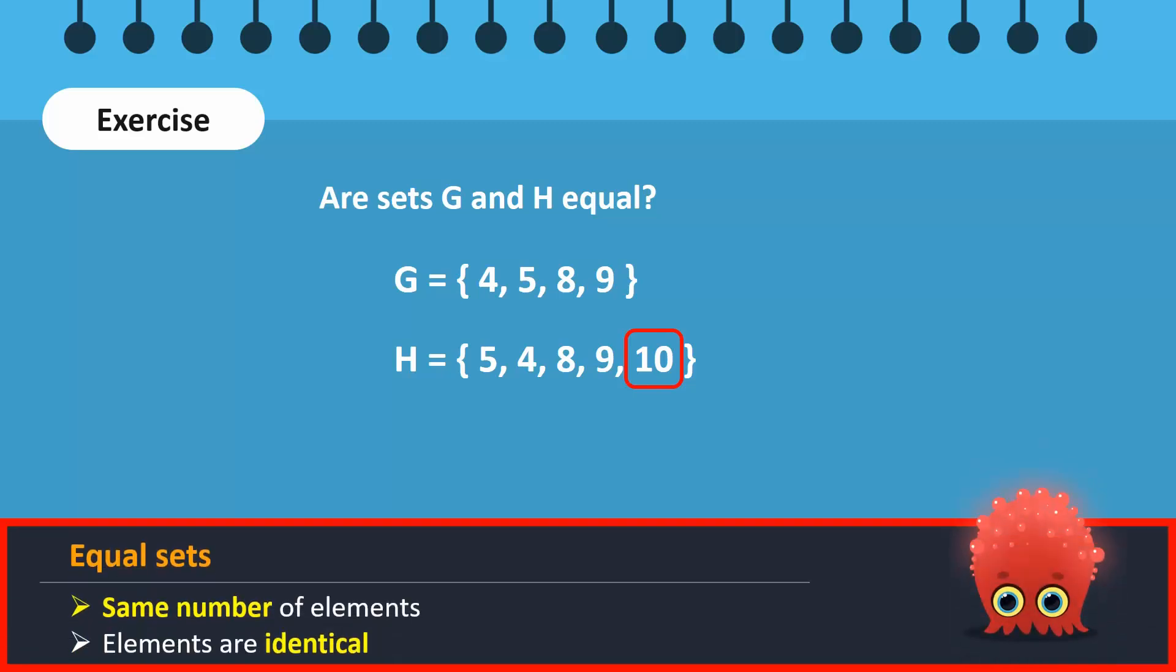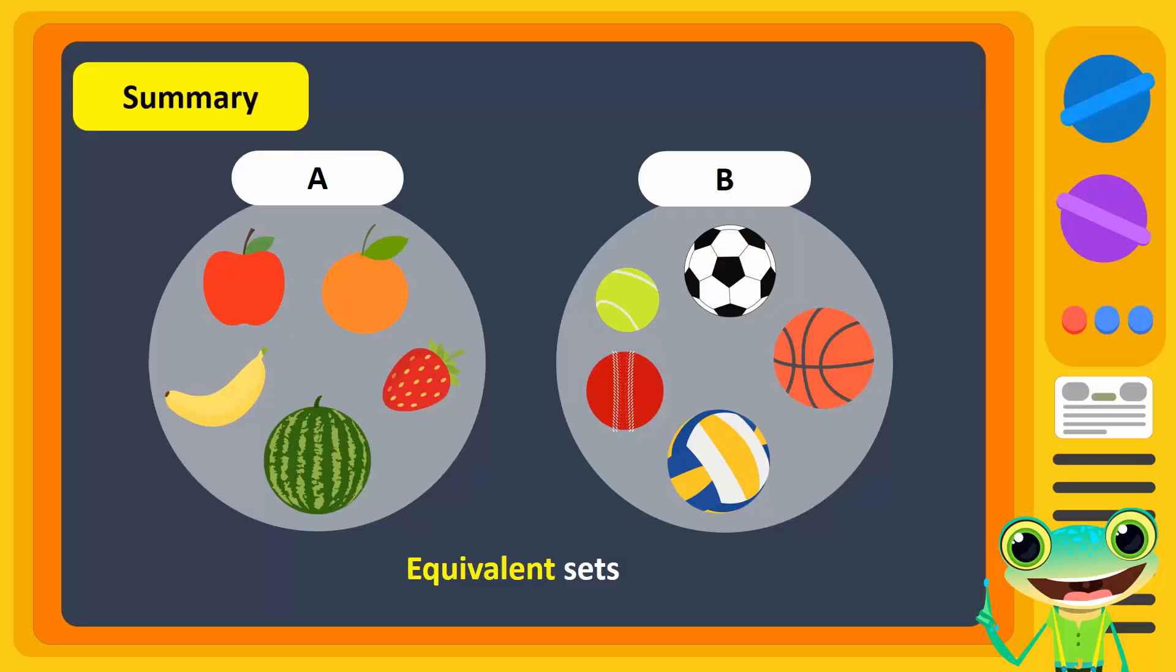Since equal sets must contain the same number of elements, and the elements must be identical, these sets are not equal. To change these to equal sets, we can remove the element 10 from set H.